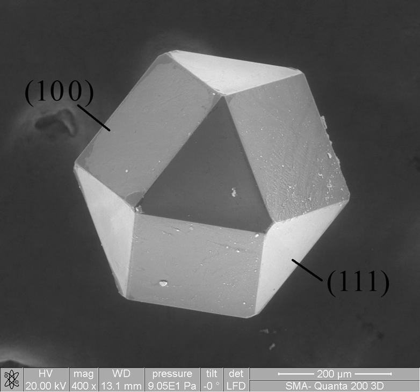Macrostructure is the appearance of a material in the scale millimeters to meters—the structure of the material as seen with the naked eye.